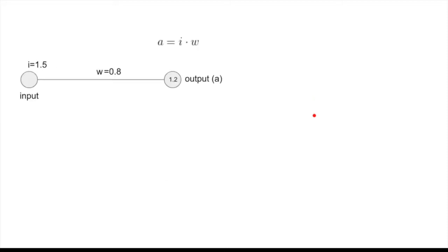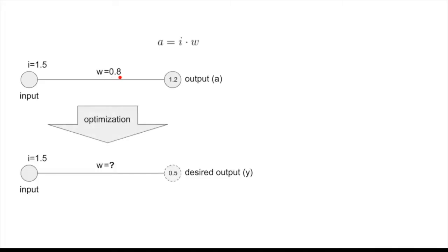The way we train or optimize neural networks is by changing the weights in such a way that the output activation becomes correct. This process of optimization or training is driven by the error or cost function. A commonly used error function is the mean squared error, and that's what we are going to be using.